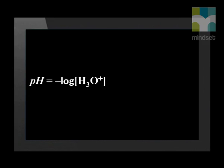The pH of a sample can also be determined by calculations, by applying the pH formula. Let's first look at the ionization constant of water and verify the pH of water by calculation.